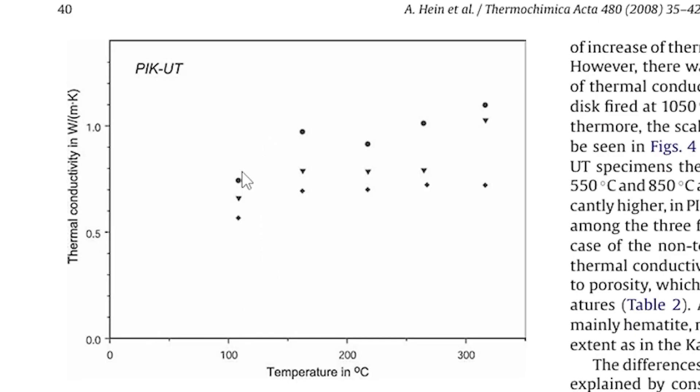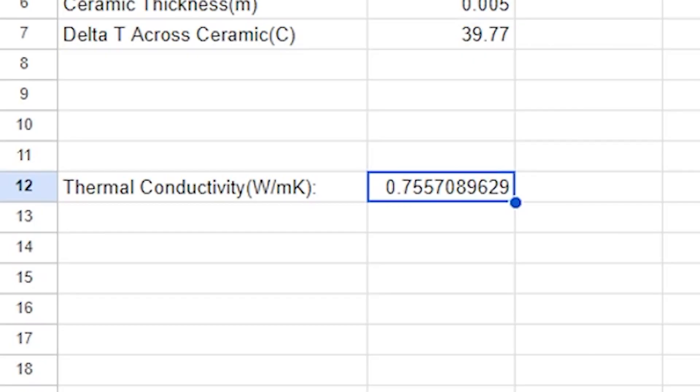And in their experiment using a commercial Lee's disk device, they found that when running the Lee's disk device at a temperature of around 120-130 degrees Celsius, they got a thermal conductivity between 0.5 to around 0.8, depending on the firing temperature of the ceramic, which is perfect. This lines up very closely to the thermal conductivity that I gathered when using my home-built Lee's disk device.